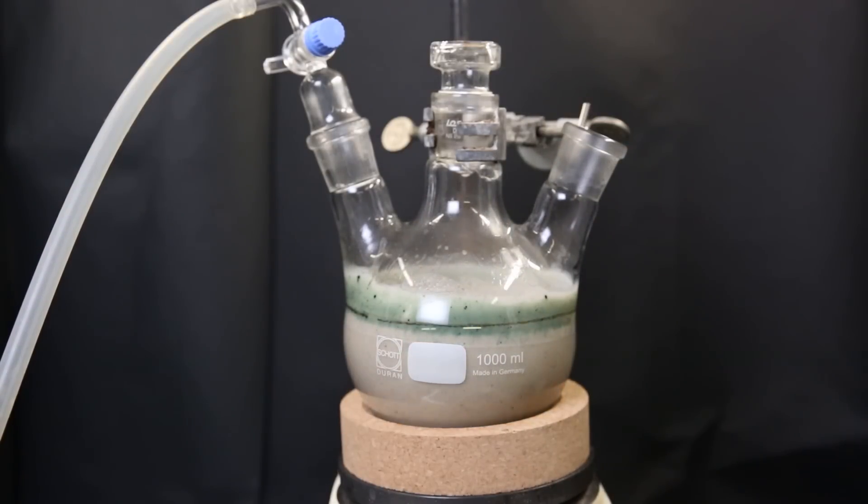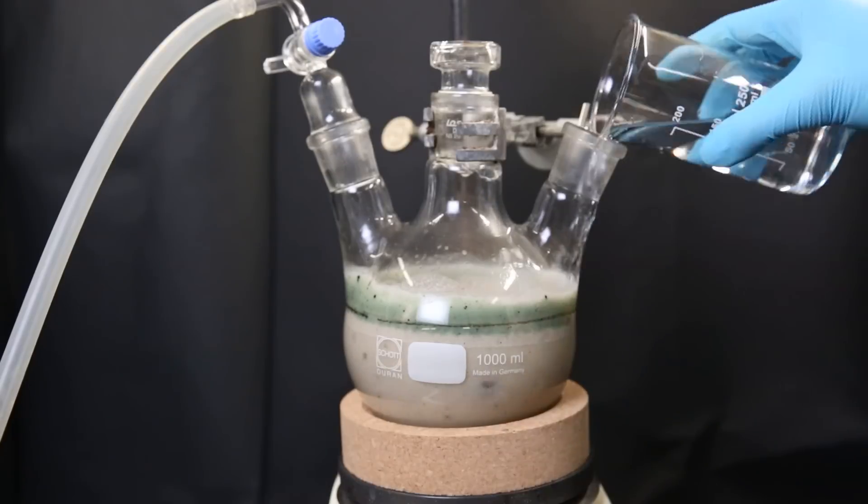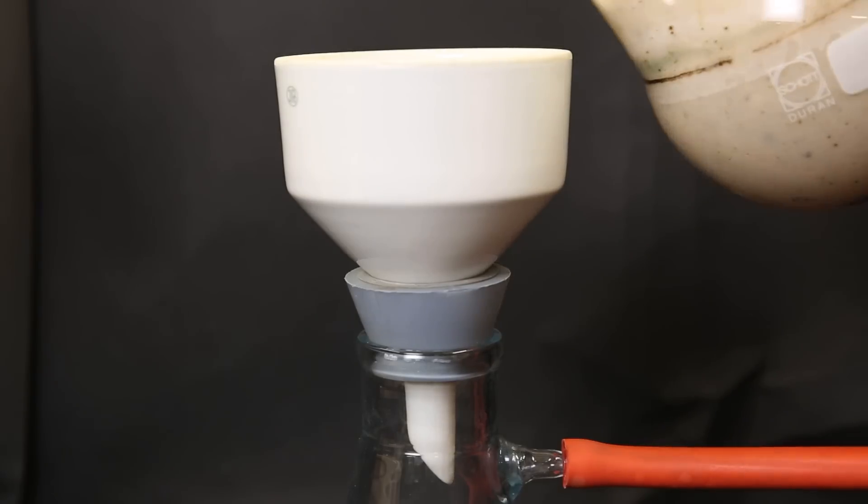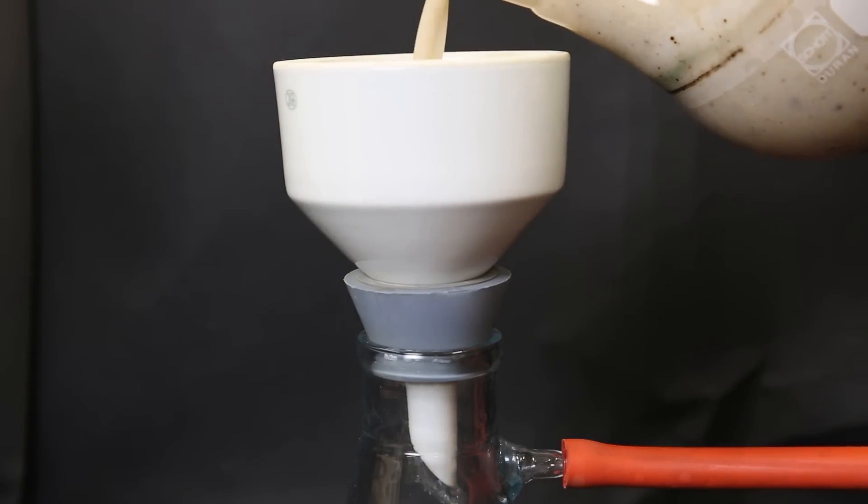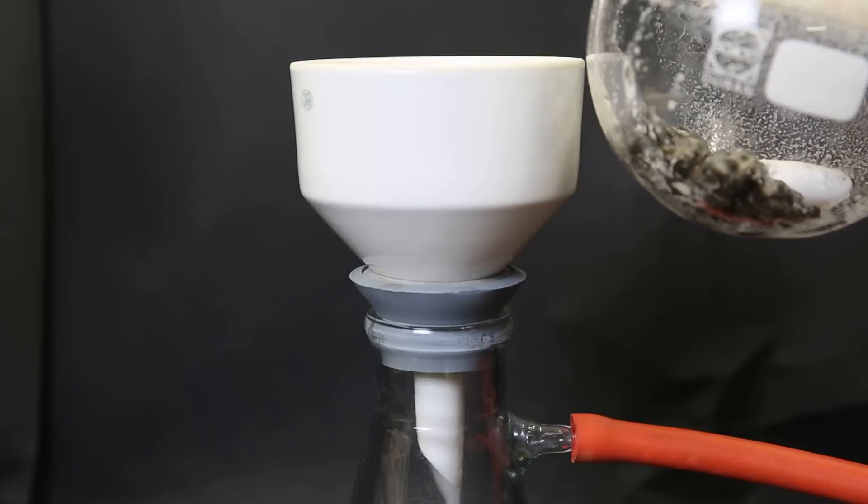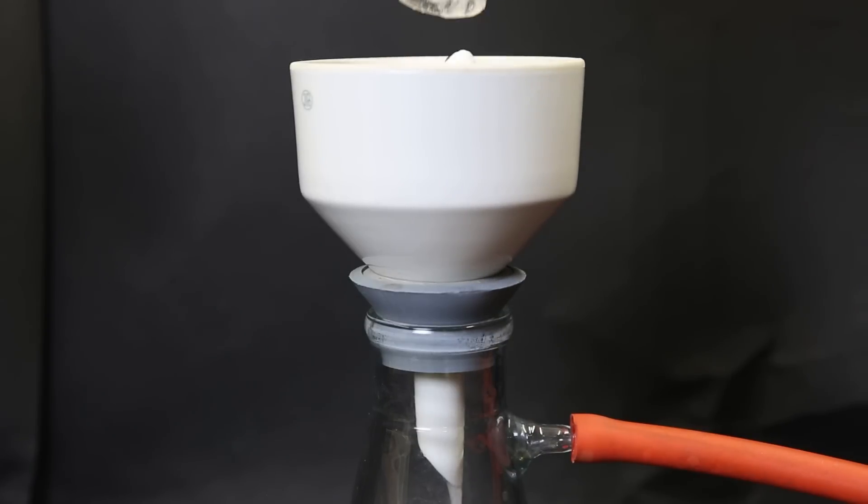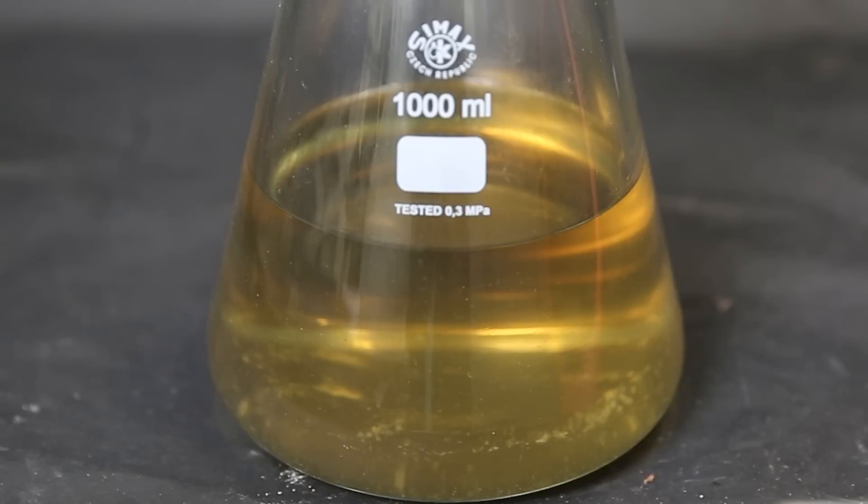I then leave it to stir for a bit, and when that is finished, I set it up for vacuum filtration. I simply filter it all through a paper filter and collect the residue. The filtrate is just a yellow-orange liquid and it's discarded.